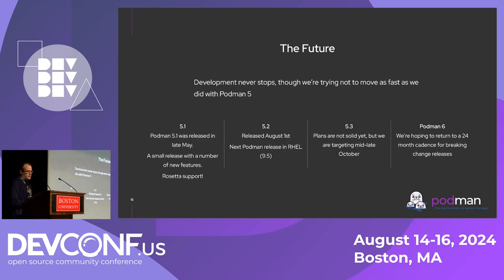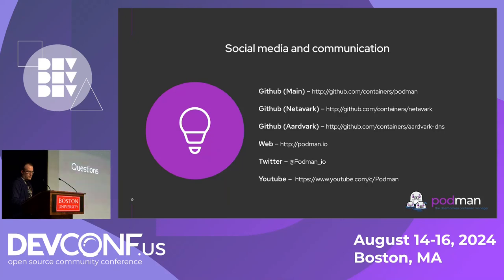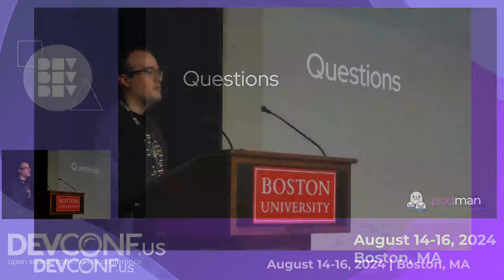The future: development never stops, and we are trying to move less fast. We did Podman 5.1 and 5.2 as relatively small feature releases in May and then August, and then 5.3 presumably sometime in October. We're hoping to return to the 24-month breaking change cadence with Podman 6.